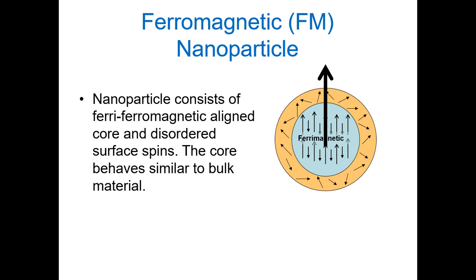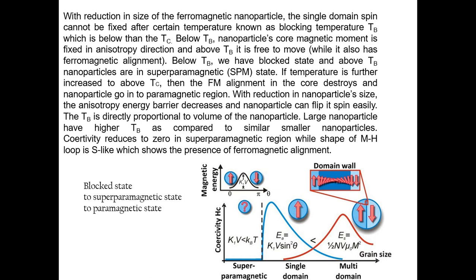At the nanoscale, due to the increase in the surface-to-volume ratio, the surface becomes very important in determining the magnetic properties of nanoparticles. Therefore we must understand this dependence. With reduction in the size of the ferromagnetic nanoparticle, the single-domain nanoparticle cannot be fixed below a certain temperature known as the blocking temperature, which is below the Curie temperature Tc.